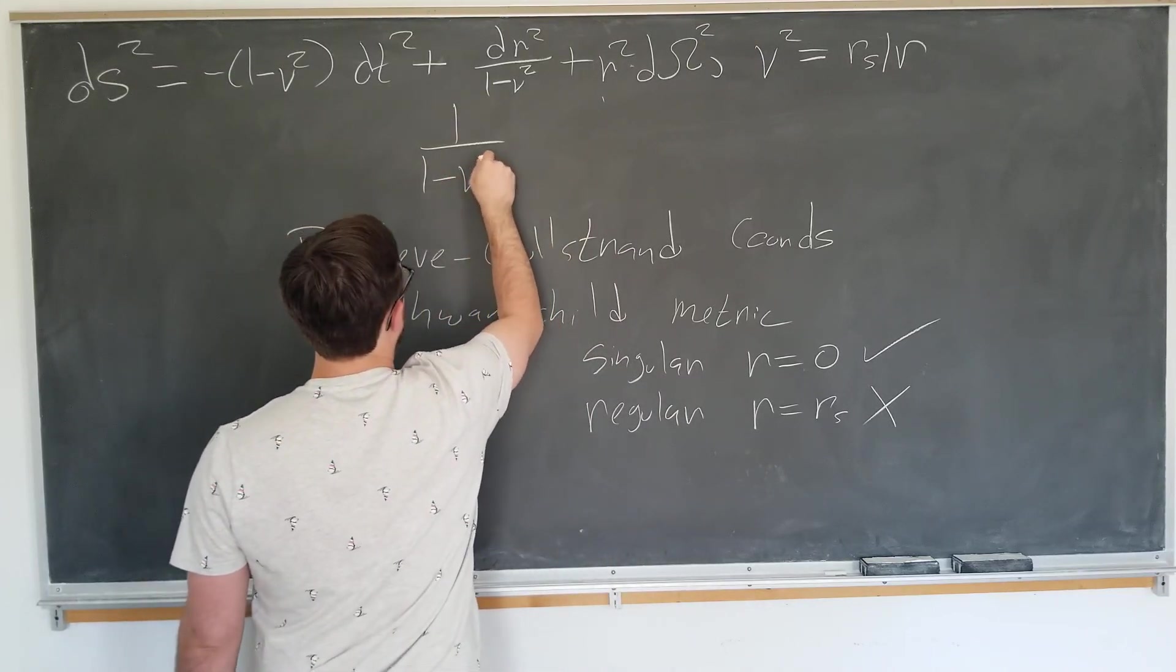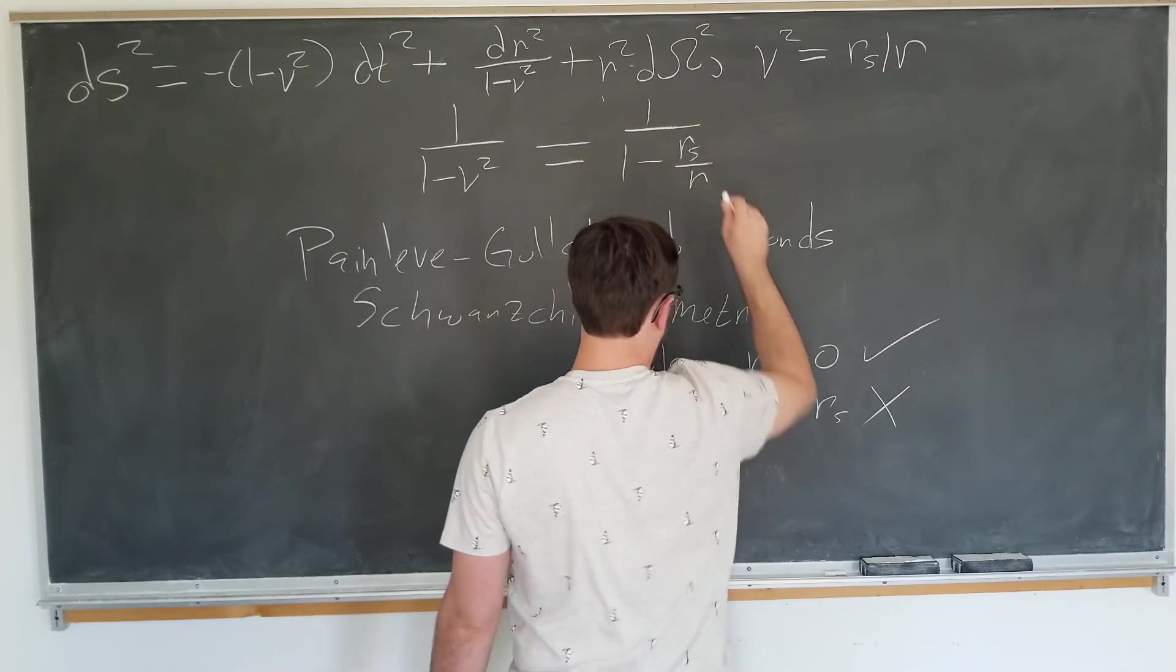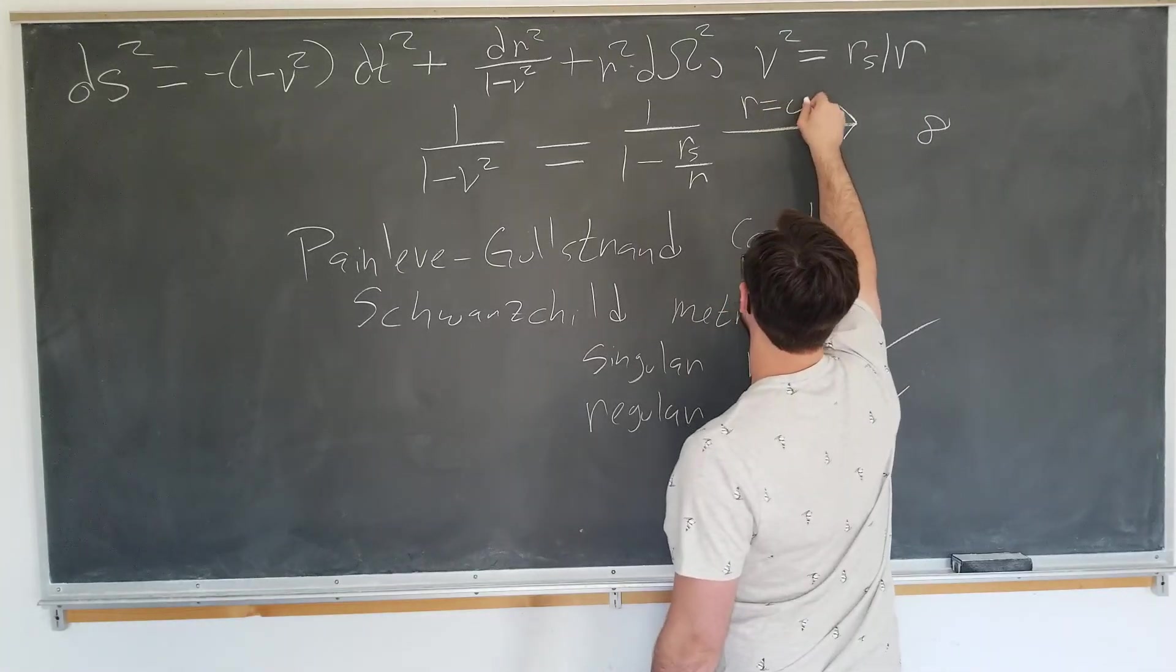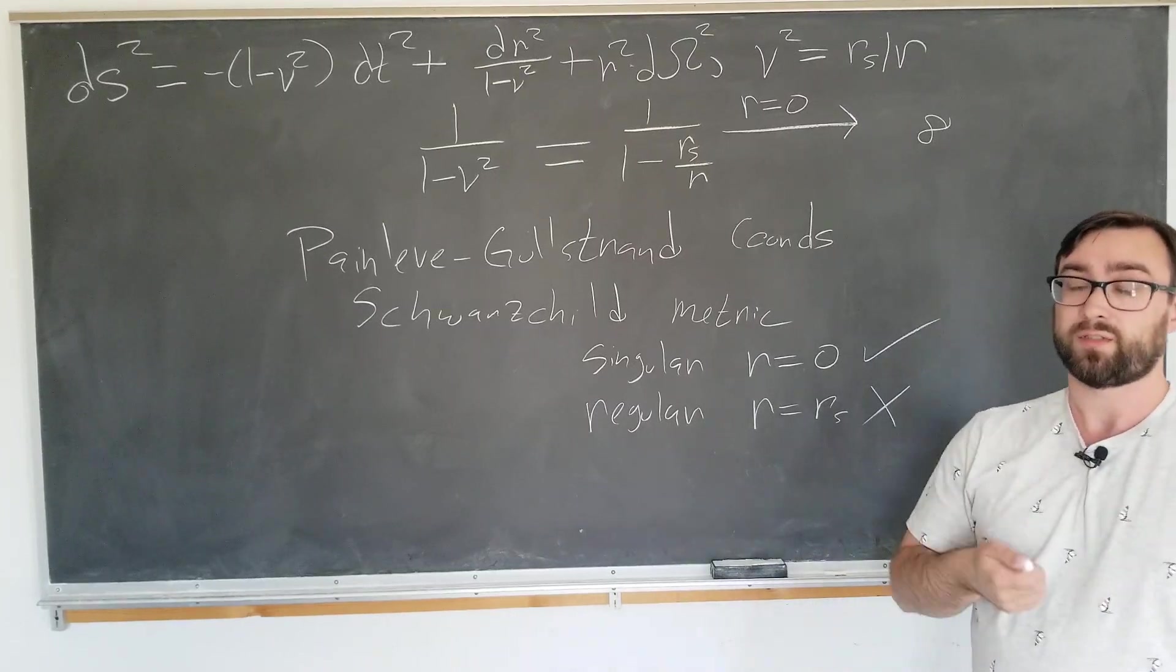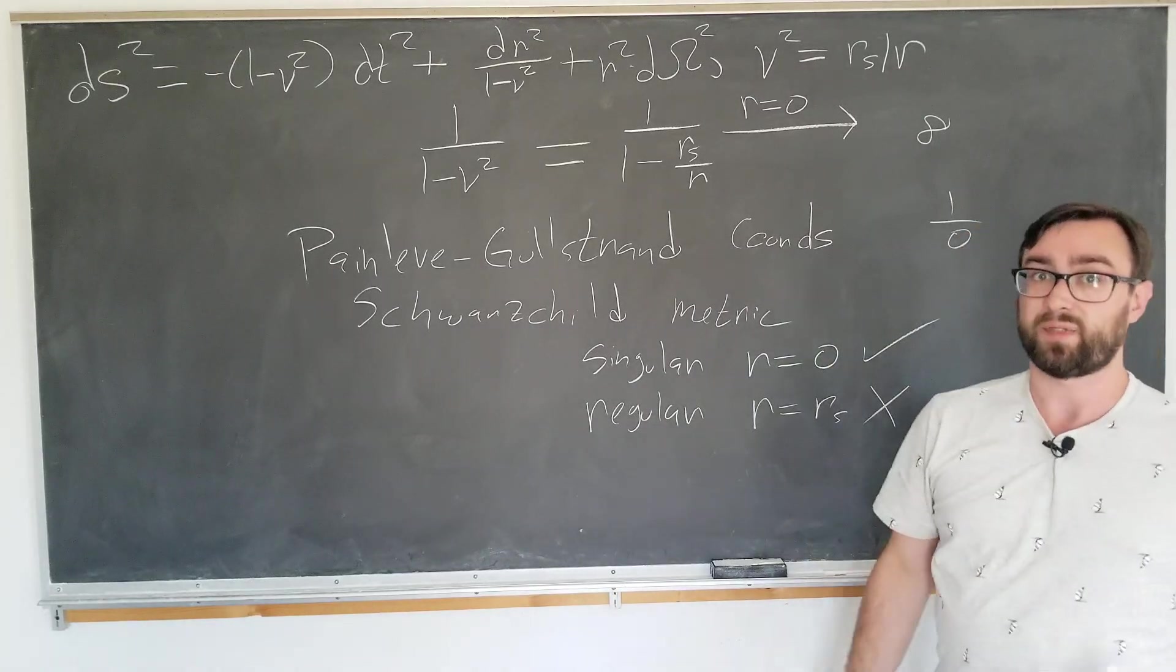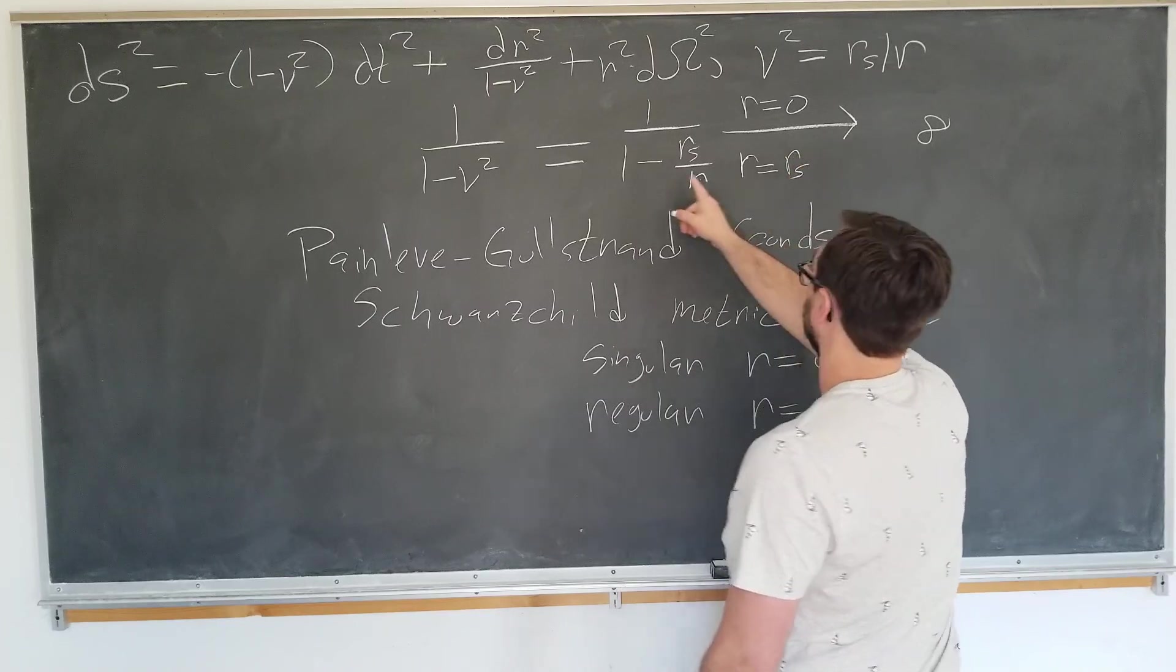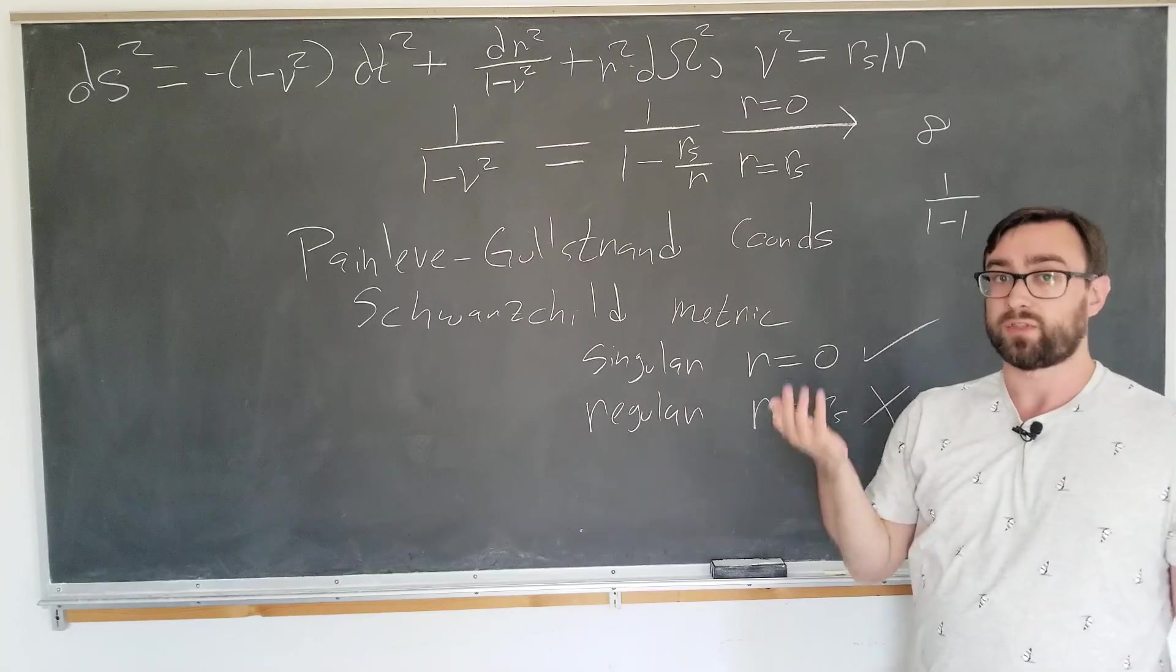1 over 1 minus v squared is 1 over 1 minus the Schwarzschild radius over r. We notice this goes to infinity both at r equals 0 since if we plug 0 in here we get infinity. You don't want any 1 over 0s because it can be plus or minus infinity. It's just not defined. It also goes to infinity at r equals rs because it becomes 1 minus 1 in the denominator which is also going to be 1 over 0.